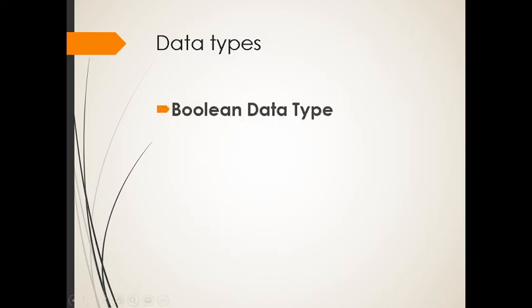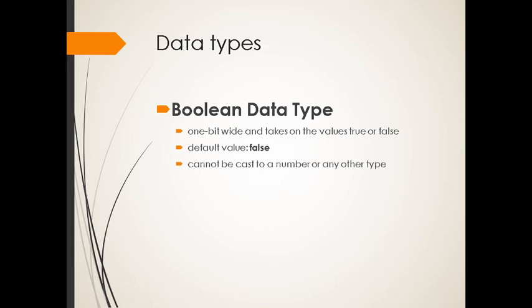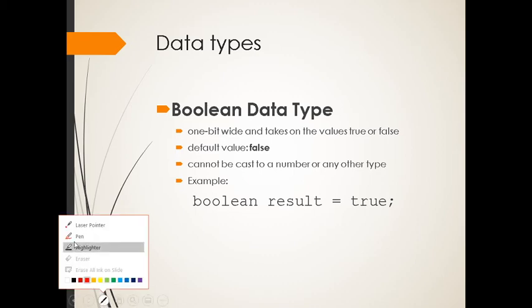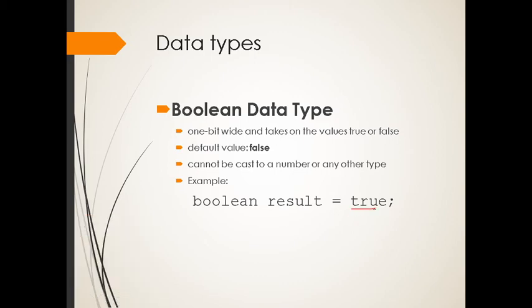So for boolean data type, one bit takes on the values true or false. Default value is actually false. It cannot be cast to a number or any other type. For example, boolean result equals true. So basically, if you have this declaration or initialization in your program, you are assigning true to your variable name result, and you are using a boolean data type.